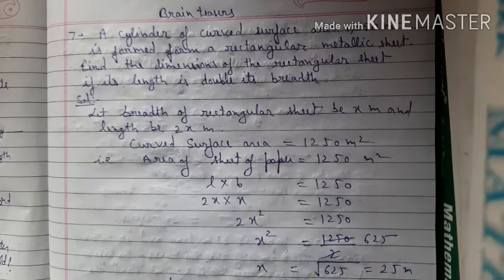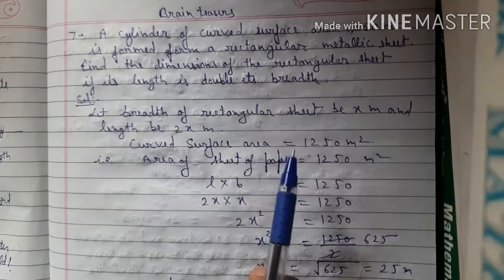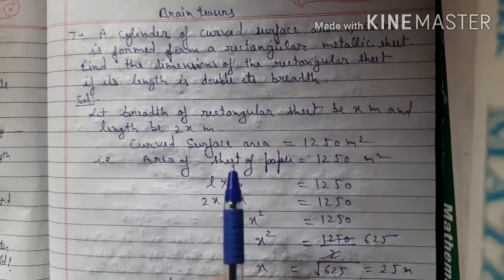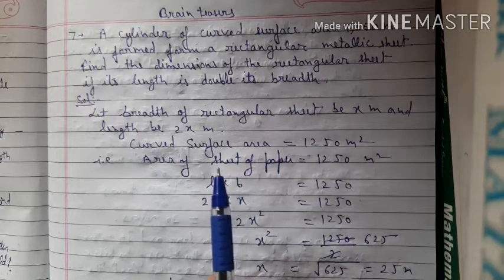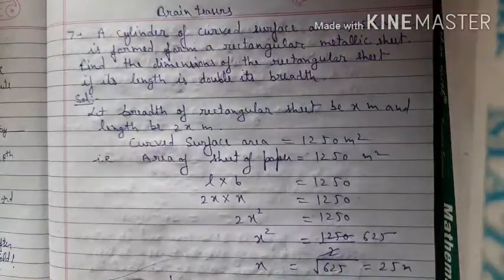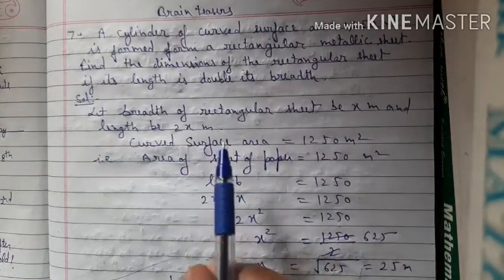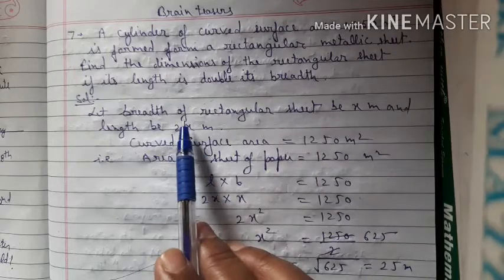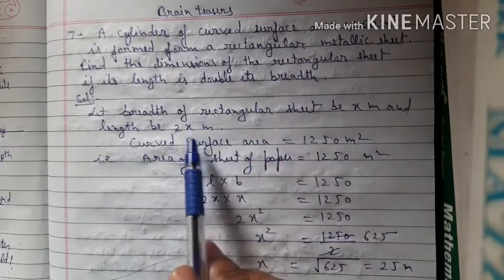When we make a cylinder from a rectangular sheet, the curved surface area of the cylinder equals the area of the sheet. The relation given is that length is double its width. So let breadth be x meter and length be 2x meter.